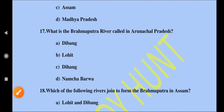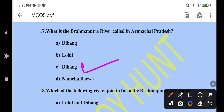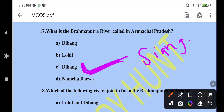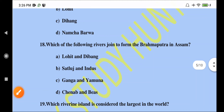What is the Brahmaputra River called in Arunachal Pradesh? In Arunachal Pradesh, the Brahmaputra River is called Dihang — also spelled Dihang.